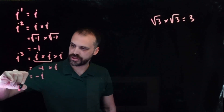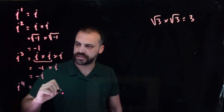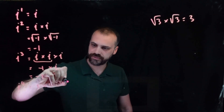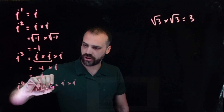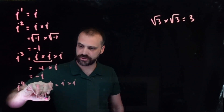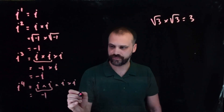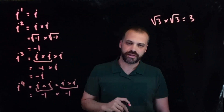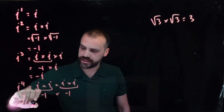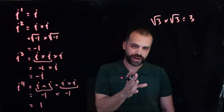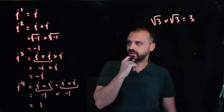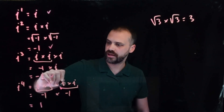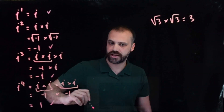i to the 4 is equal to i times i times i times i. And i times i, we've already established, is equal to negative 1. So we have negative 1 and negative 1. And negative 1 times negative 1 is positive 1. So we have i, negative 1, negative i, and 1.